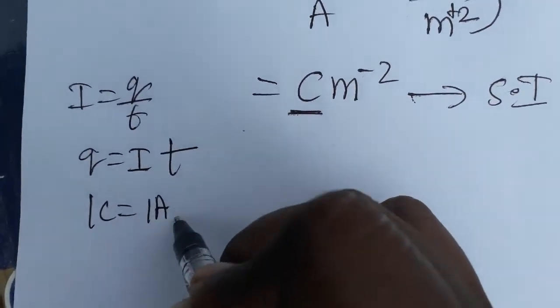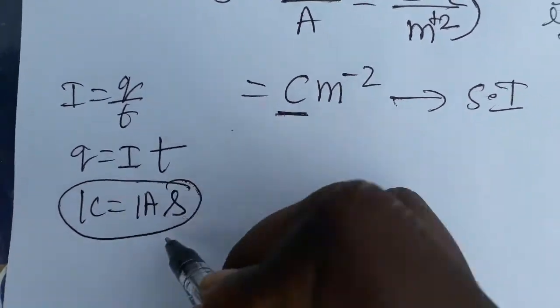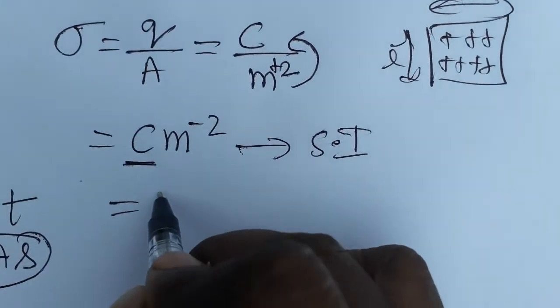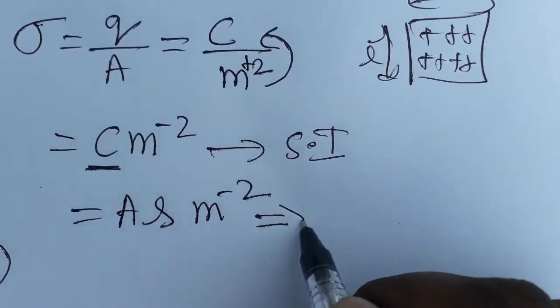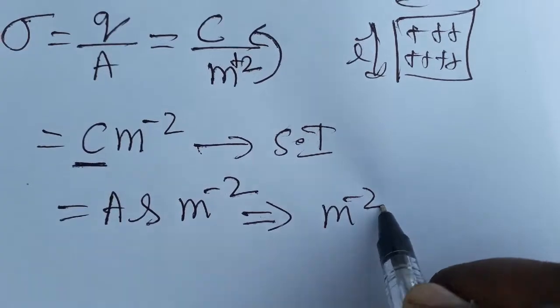One coulomb is one ampere into one second. So charge I am changing into ampere into second. Coulombs we can write as ampere into second meter minus two.